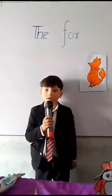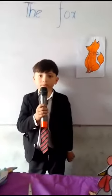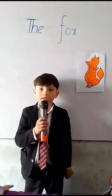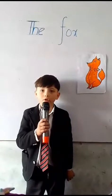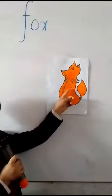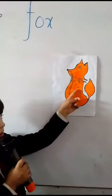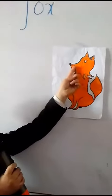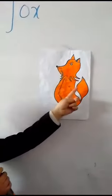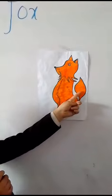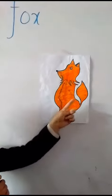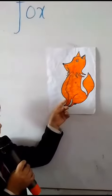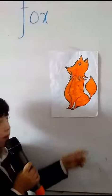Assalamu alaikum, my name is Asayu Maha, I read in Description 2D. Today my topic is a pond animal. It has a fluffy coat and bushy tail. It is a clever and white animal.